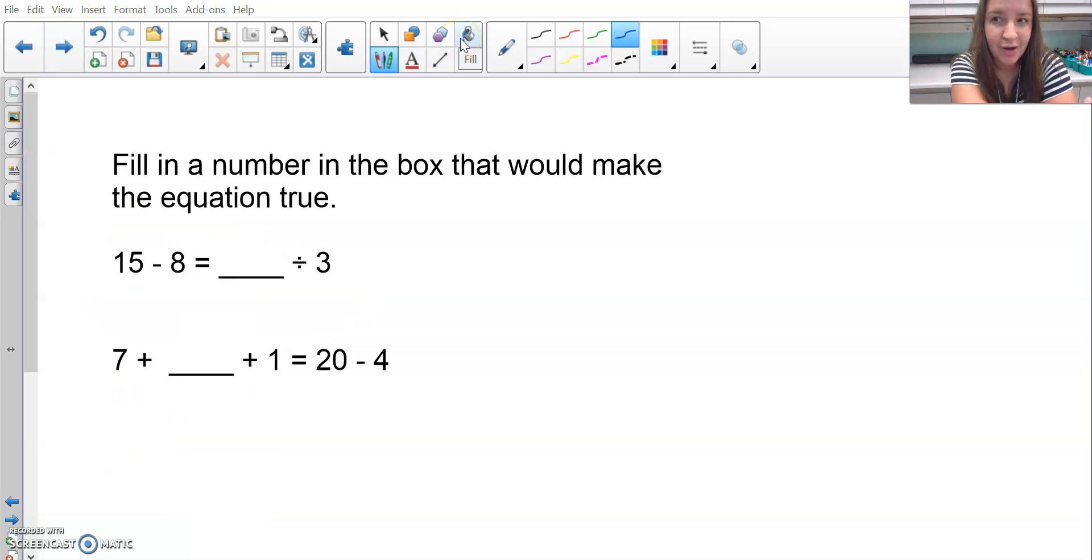Now I need to fill a number in the box that will make the equation true. I look at both sides, and on this side of the equal sign I have 15 minus 8, which is equal to 7. So I need this side to be equal to 7 as well.